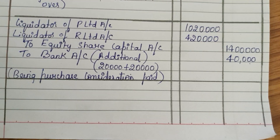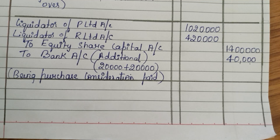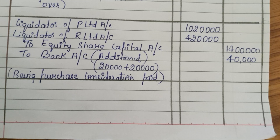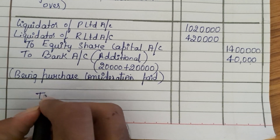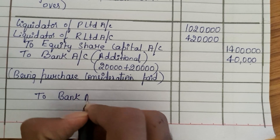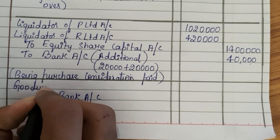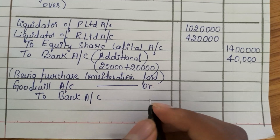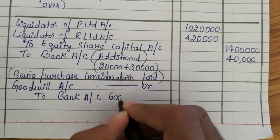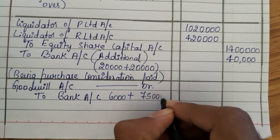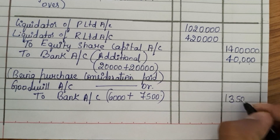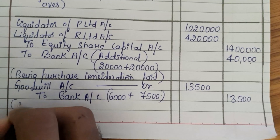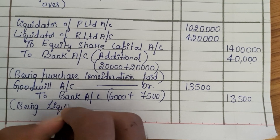Fourth entry: The liquidation expenses — Rs. 6,000 for P Limited and Rs. 7,500 for R Limited — were borne by PR Limited. Money is going out, so credit Bank Account. It is paid from extra money, treated as goodwill. Goodwill Account is debited and Bank Account is credited. Total liquidation expenses: Rs. 6,000 plus Rs. 7,500 equals Rs. 13,500. Narration: being liquidation expenses paid.